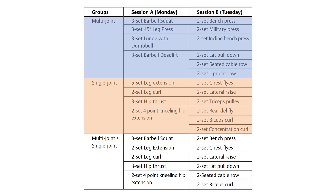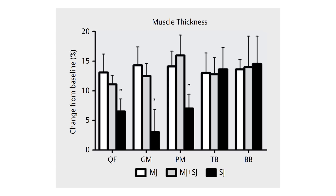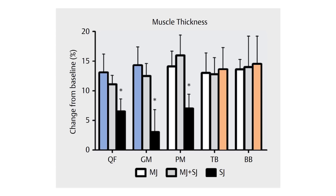The second group performed only isolation lifts, such as leg extensions, leg curls, chest flies, and bicep curls. The third group performed a combination of compound and isolation lifts, including squats, leg curls, bench press, and bicep curls. At the end of the 24-week study, changes in muscle thickness were different between groups for each muscle. For example, the compound only group saw the most growth of the quads and glutes, whereas the isolation only group saw the most growth of the triceps and biceps.